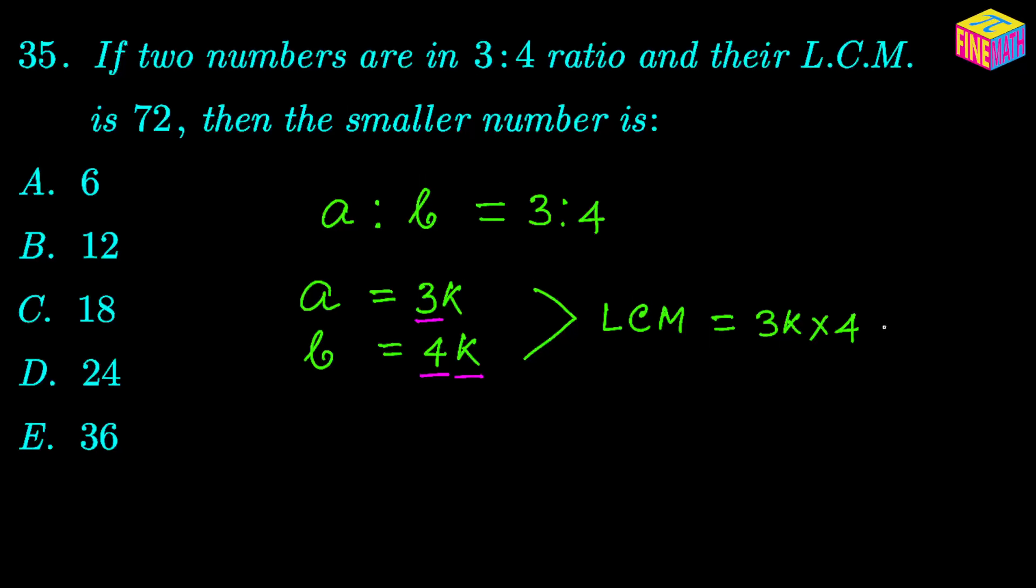So the LCM is essentially 12 times K and the value of LCM has also been provided in the question and that is 72. So from here we can say 12 times K is equal to 72, that means K would be equal to 72 divided by 12, that is 6.